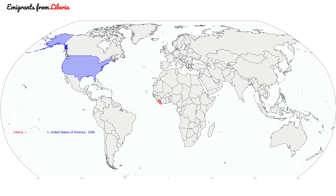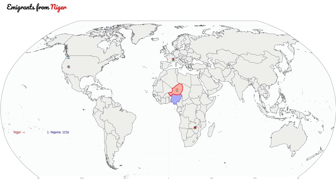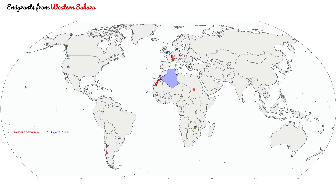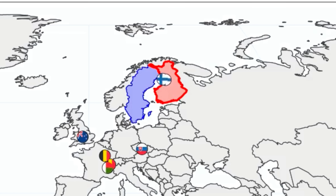In this video we will look at migration patterns. I've taken data from the UN that shows how many people in each country were born elsewhere. Each flag ball in the video represents 100,000 people rounded to the nearest full 100,000. For example, when two balls move from Finland to Sweden, it means that about 200,000 people born in Finland lived in Sweden in 2020 when the data was collected.